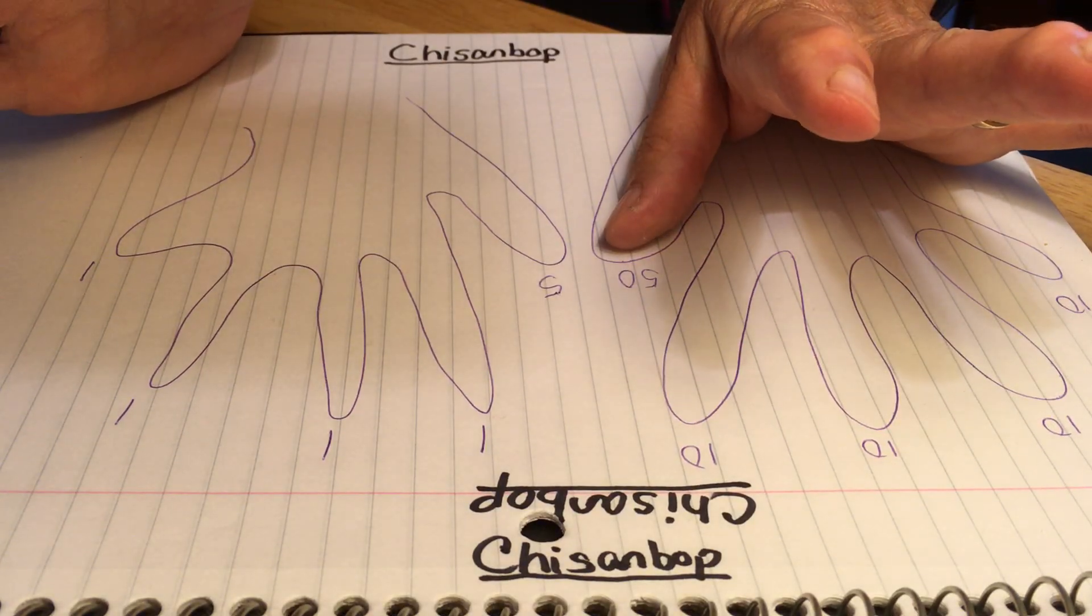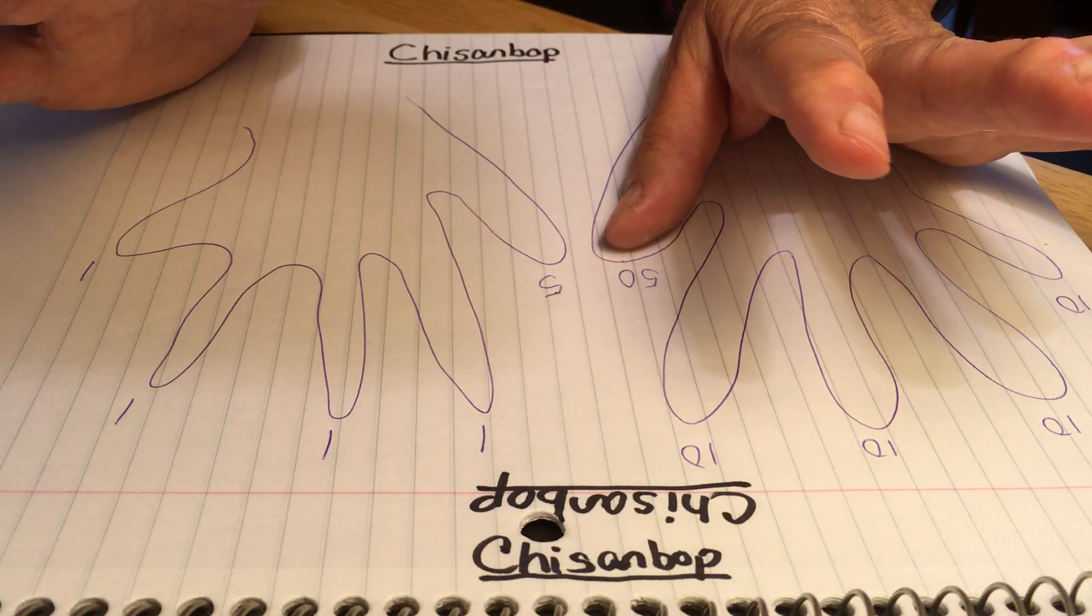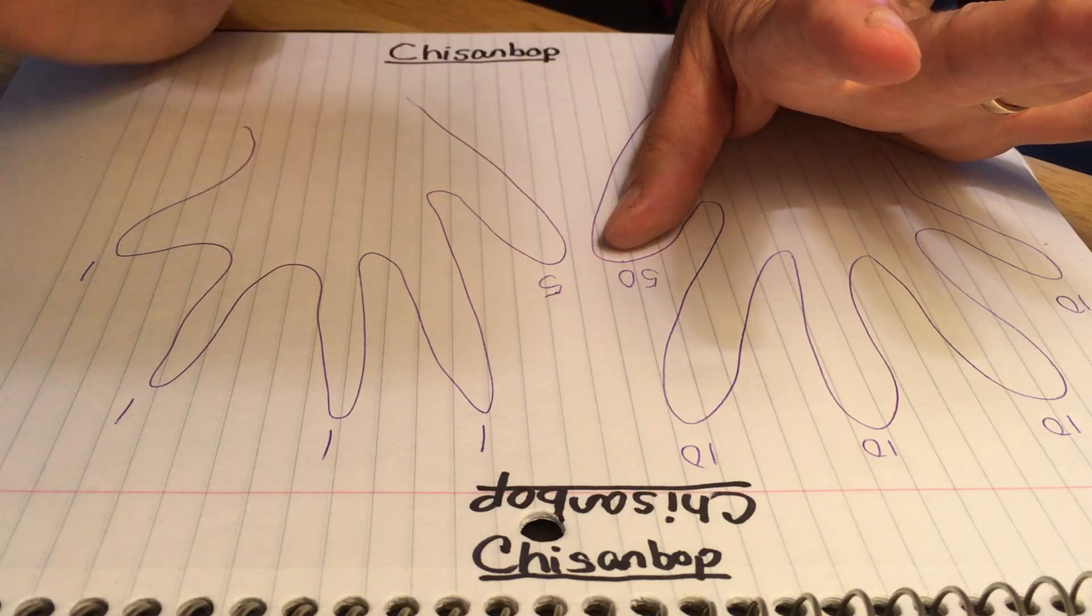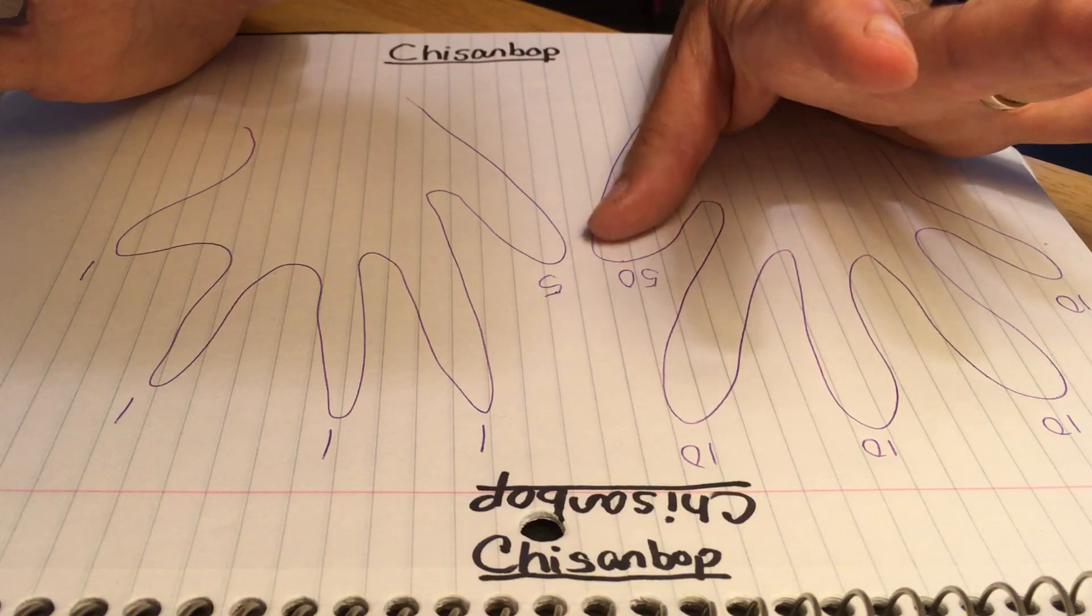50. We'll go ahead and stop at that point. Notice that all my fingers are up in the air now except my thumb on the left hand, which represents a 50.